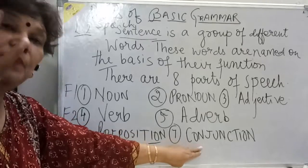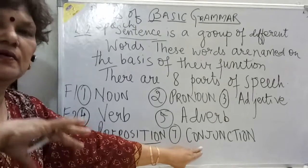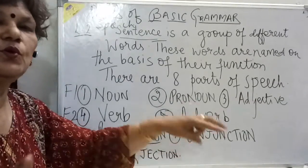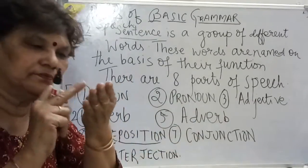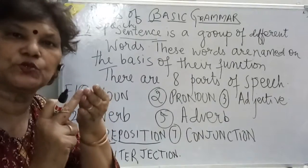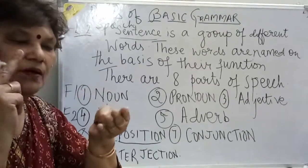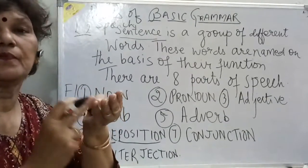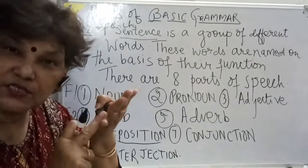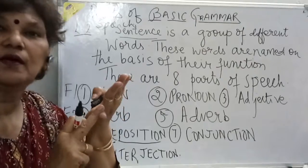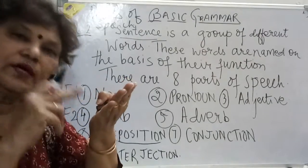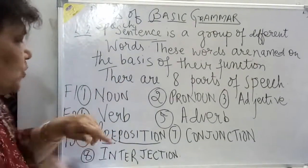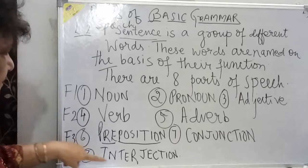'Pre' means before and 'position' means stand — so a preposition stands before a noun. Conjunction is also a group of words that joins two words, two clauses, or two sentences — it joins two or more things together.